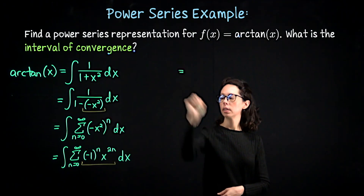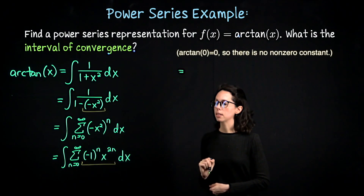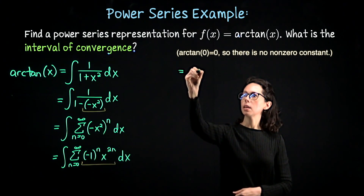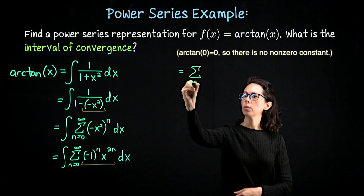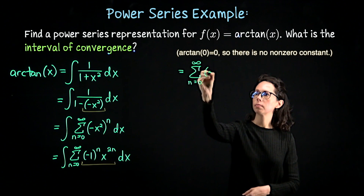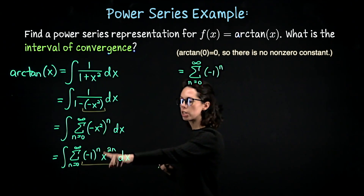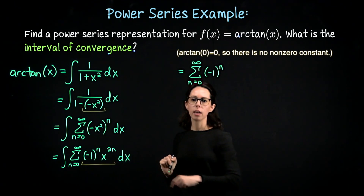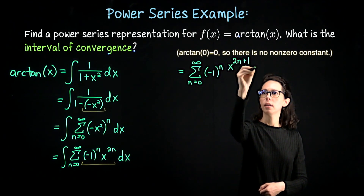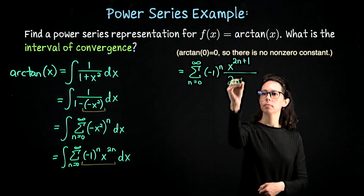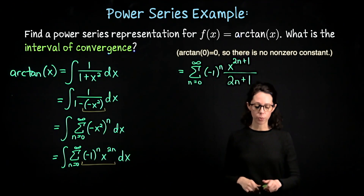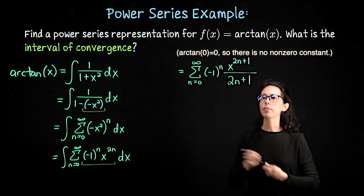Continuing over here: I'm going to integrate, so we'll get rid of the integral symbol and what we're going to have is the sum of terms starting from n equals 0 going to infinity. Negative 1 to the n is a coefficient that stays in front. When I antidifferentiate x to the 2n using the power rule, that's going to become x to the 2n plus 1 divided by 2n plus 1. And that is our power series representation for arctan of x, centered at the origin.